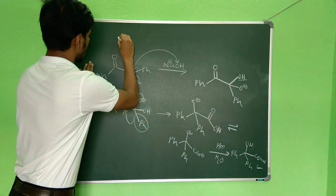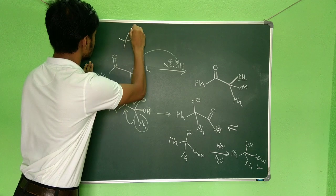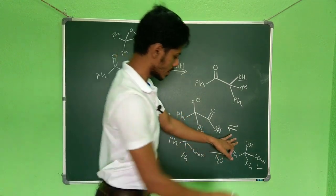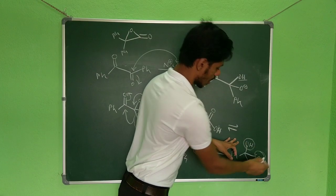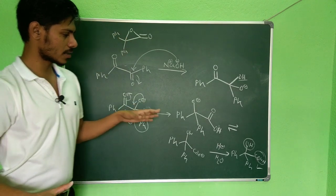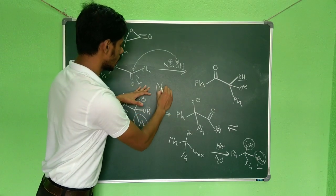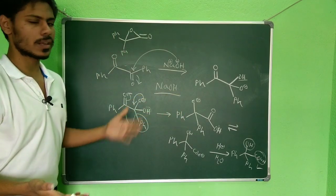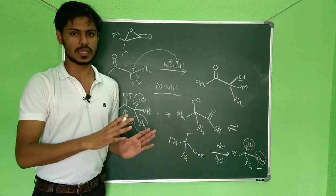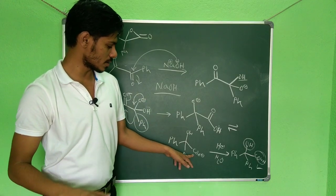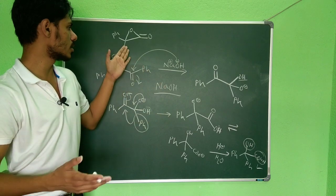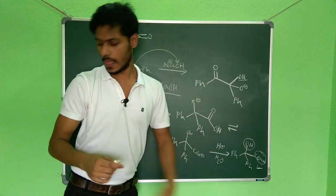In the CSIR NET exam, one option given was a lactone structure. Lactonization could in principle occur between the OH group and the carboxylic acid, forming a strained lactone. However, you must note that the reaction condition given in the last step was only NaOH — basic conditions. Lactonization or esterification cannot happen in basic medium; in basic medium it always remains as the carboxylate anion, so the OH cannot attack. That lactone is not the product; many people are confused, but the correct product is benzilic acid.